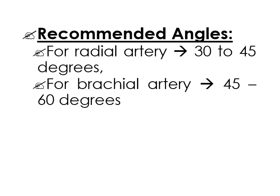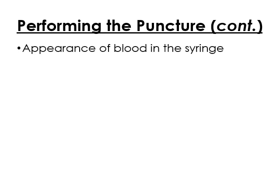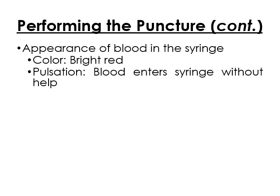Recommended angles: for radial, 30 to 45 degrees; for brachial, 45 to 60 degrees; for femoral, a different angle applies. The appearance of the blood should be bright red. Blood enters the syringe without assistance — this is pulsation. When you puncture the artery, the plunger rises on its own because the artery has its own pulse and pressure.